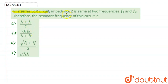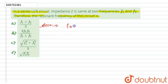The question is: in a series LCR circuit, impedance Z is the same at two frequencies f1 and f2. Therefore, find the resonant frequency of the circuit. We have to find the resonant frequency, and we know it is given by fr = 1 upon 2π√(LC), for the series LCR circuit.